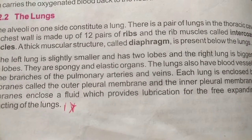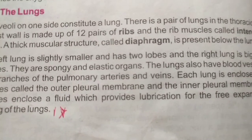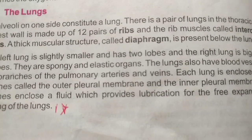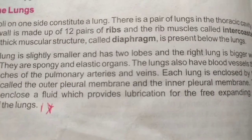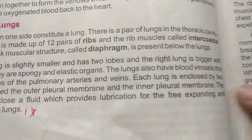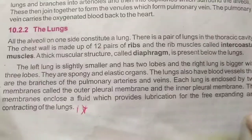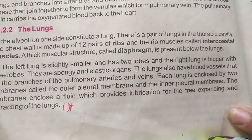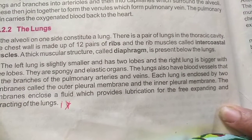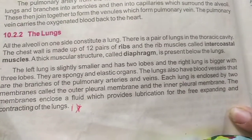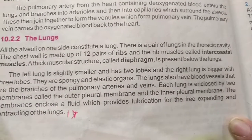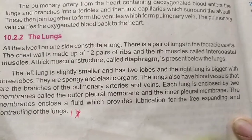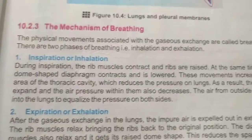As you may remember from Chapter 9 of Grade 9, arteries are supposed to carry blood rich in oxygen and veins carry blood rich in carbon dioxide. Each lung is enclosed by two membranes called the outer pleural membrane and the inner pleural membrane. These membranes enclose a fluid which provides lubrication for the free expanding and contracting of the lungs.